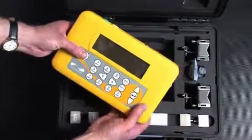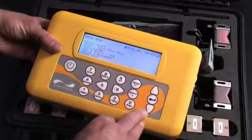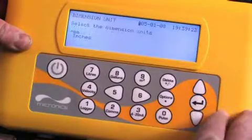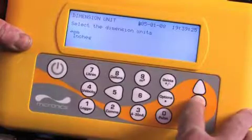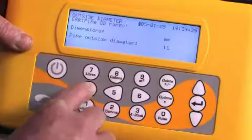To begin the procedure, switch the unit on by pressing the power key and press enter to get to the main menu. Select quick start and follow the on-screen menu to program the unit. Select either millimeters or inches and press enter. Enter the outside diameter of the pipe.